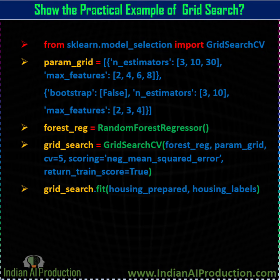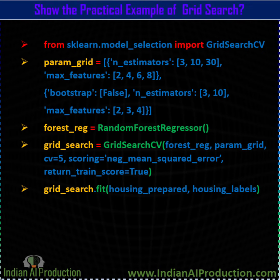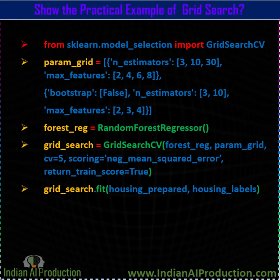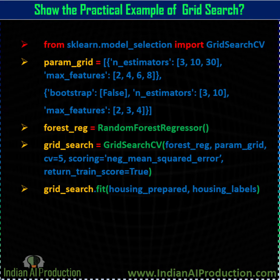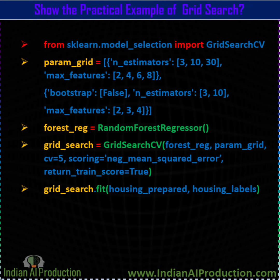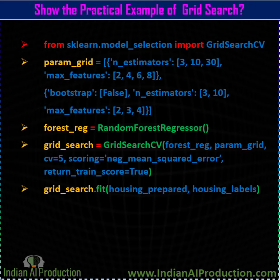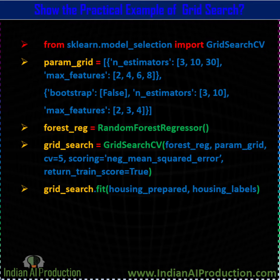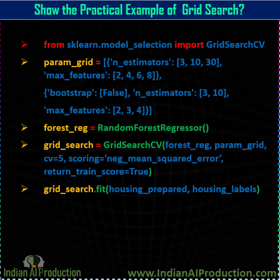First, from sklearn.model_selection, import the GridSearchCV class. Then create a dictionary of multiple parameters by passing multiple values for each respective parameter. Then combine all the dictionaries into a list.